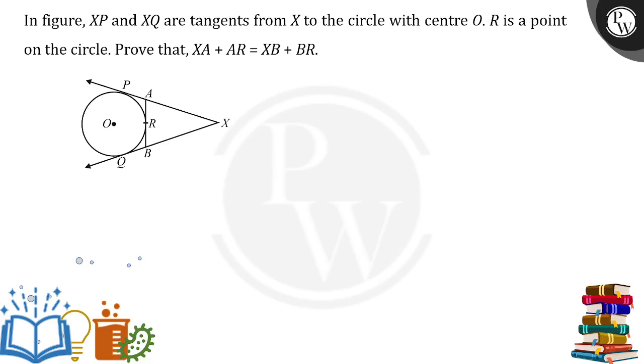So in the given figure, X is external point and from X we are having two tangents, that is P and Q. So first of all, one clarity is here that XP would be equal to XQ, right?